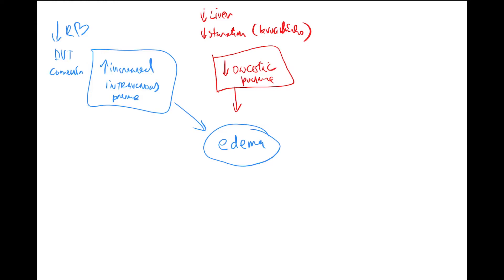Not eating enough proteins causes decreased oncotic pressure. You can also lose proteins in nephrotic syndrome, where albumin passes through the glomerulus and escapes into the urine. You can also lose proteins through skin burns. In all these cases, oncotic pressure decreases and fluid escapes into the interstitium.